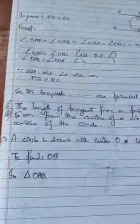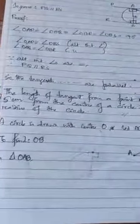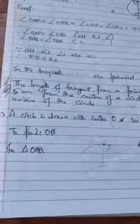In this question, the length of tangent from a point A at distance five centimeters from the center of a circle is four centimeters. Find the radius of the circle. So we need to find the radius of the circle.